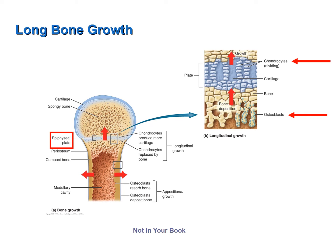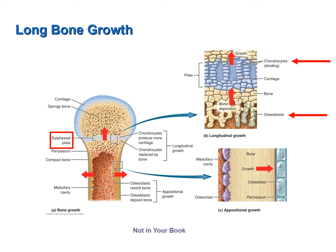Long bones also grow in width — called appositional growth — and this occurs at the diaphysis. Osteoblasts found in the periosteum form new bone tissue, causing the compact bone to thicken. At the same time, osteoclasts lining the medullary cavity dissolve bone, causing an enlargement of the medullary cavity. So with appositional growth, you get both an increase in the thickness of compact bone and a widening of the medullary cavity.